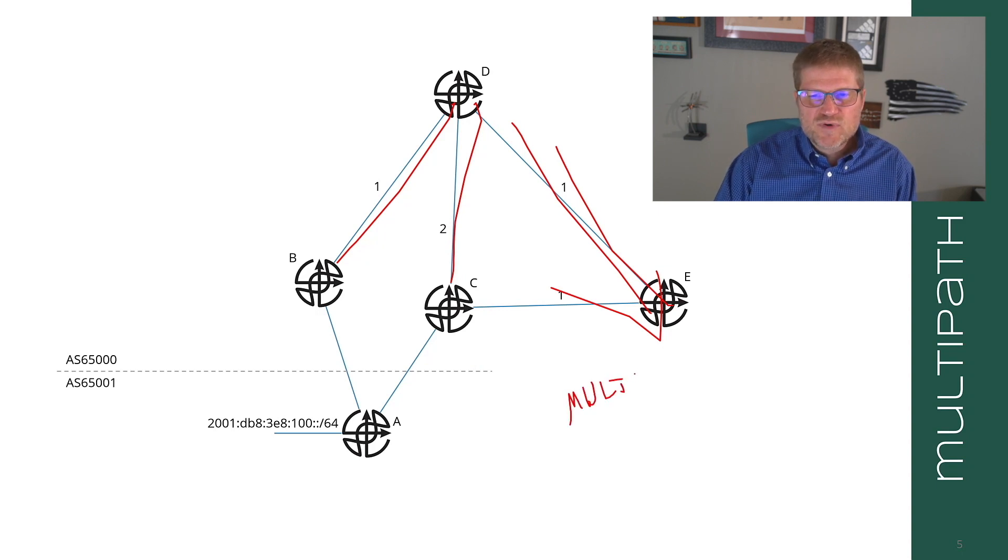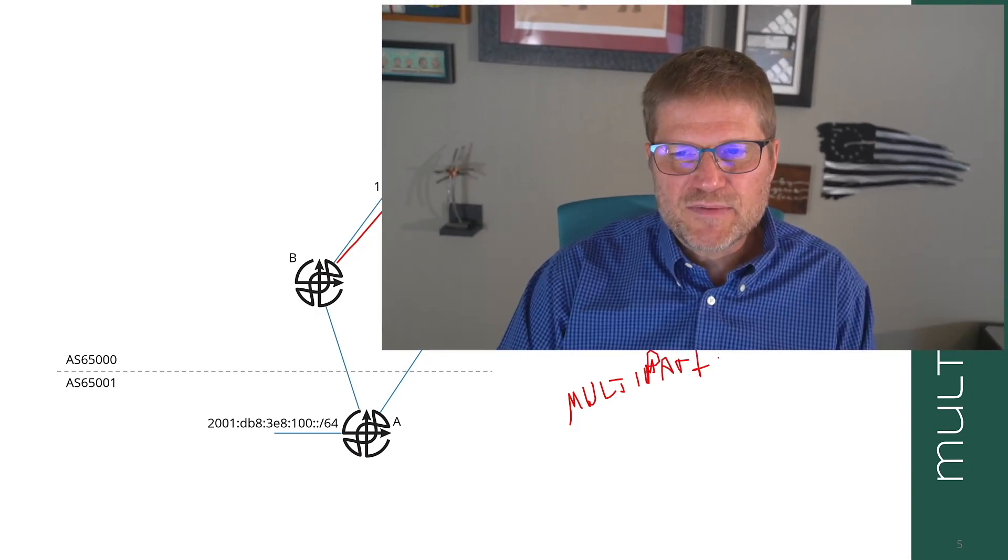And this is originally what multipath was set up for, was to solve this specific problem. So multipath allows the route reflector or a BGP speaker to send multiple paths to a given destination. You'll find this in data center networks and other places with EBGP being used today.